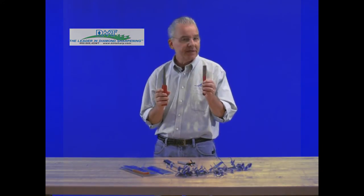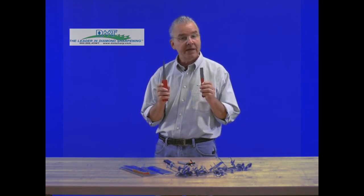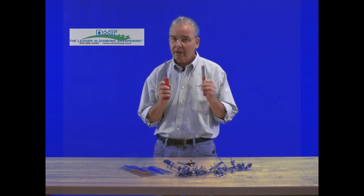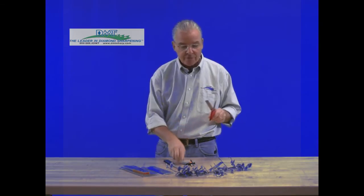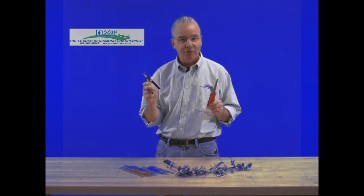Both of these tools, the DMT Diamond Mini Hone and the DMT Diamond Flat File, are designed for really close sharpening applications and they're perfect for maintaining very small garden snips such as these all year round.